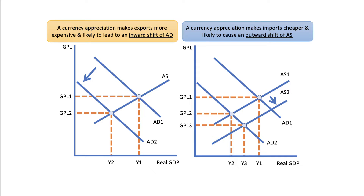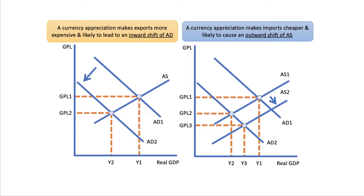In the exam, make good use of aggregate demand and aggregate supply analysis. You can show, for example, an appreciation making exports more expensive — perhaps shifting aggregate demand to the left. But also note that imports are cheaper, so you get an increase in aggregate supply. Don't be afraid to use AD/AS diagrams to make your point.